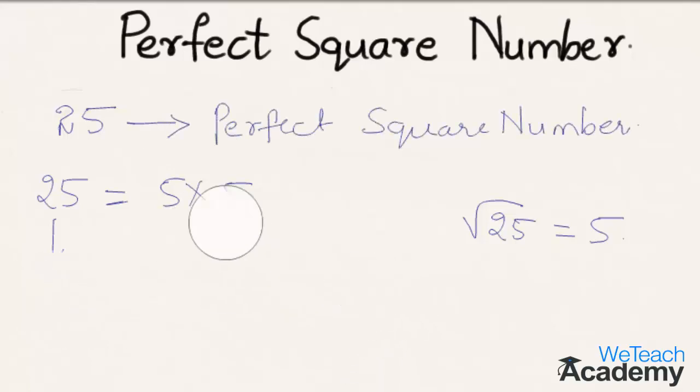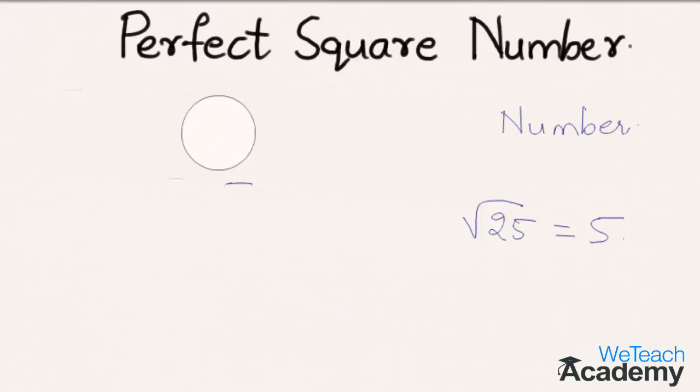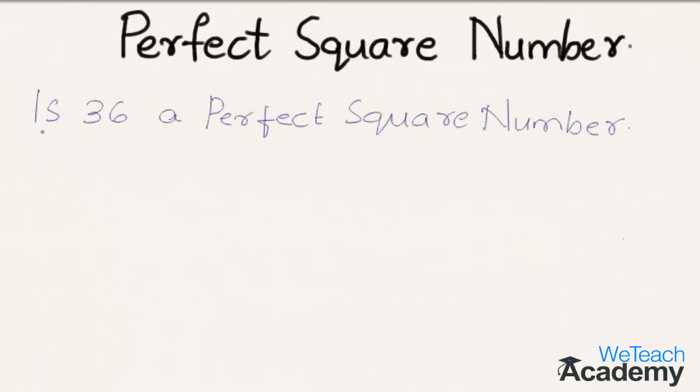So here now let us proceed and solve a problem regarding perfect square number. We have to justify whether 36 is a perfect square number. So now let us check this by the process of factorizing numbers.